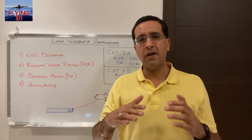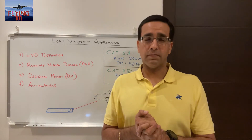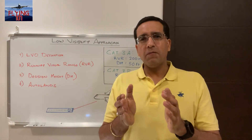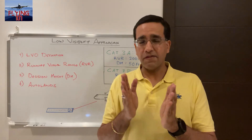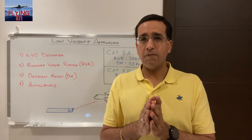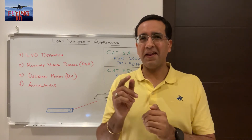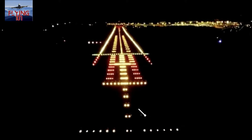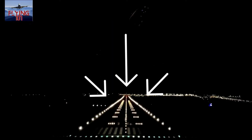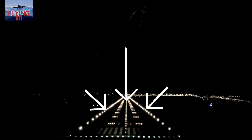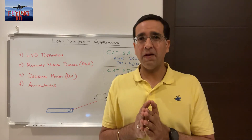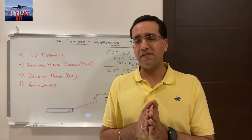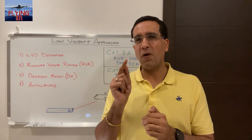The visual references for a Category 3 approach — in case of a Category 3 Alpha approach — must contain not less than three large segments of the centerline of the approach lights, or the runway centerline, or the touchdown zone lights, or the runway edge lights. In case of a Category 3 Bravo approach, we are talking about a visual reference containing at least one centerline light.